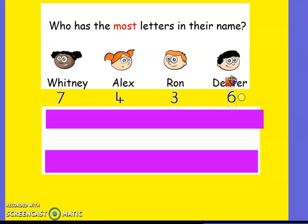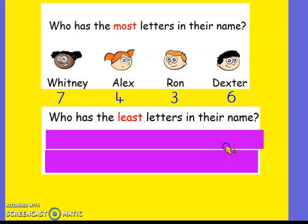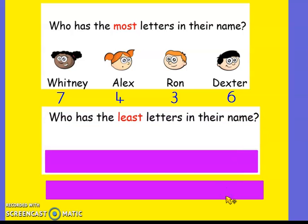So it says, who has the most letters in their name? Out of those numbers, who has the most? Seven's the biggest number there. So Whitney has the most letters in her name. Who has the least letters in their name? Whitney's got the most — who has the least? Yeah, it's Ron, isn't it? He's only got three letters in his name. Three letters.